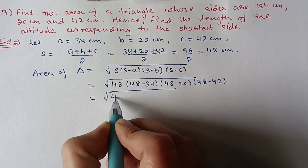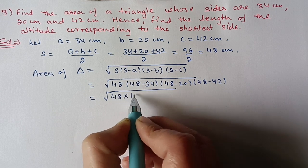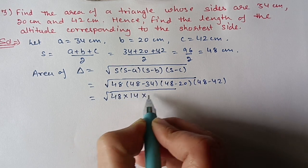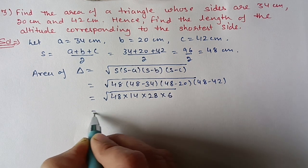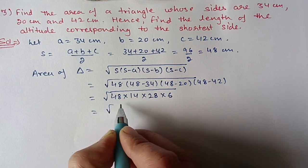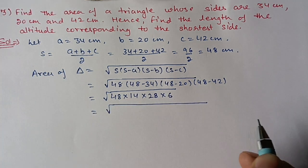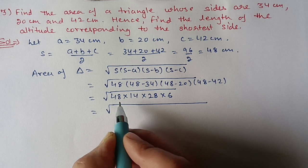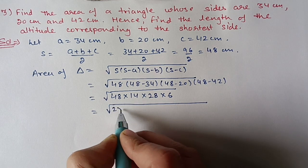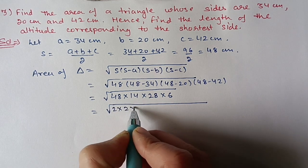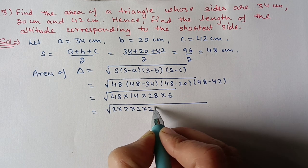After subtraction we get 48 × 14 × 28 × 6. We do prime factorization: 48 = 2 × 2 × 2 × 2 × 3, and proceed to factor and pair all numbers.